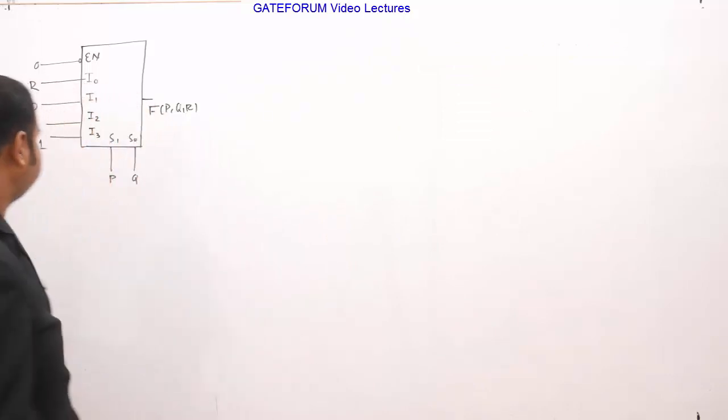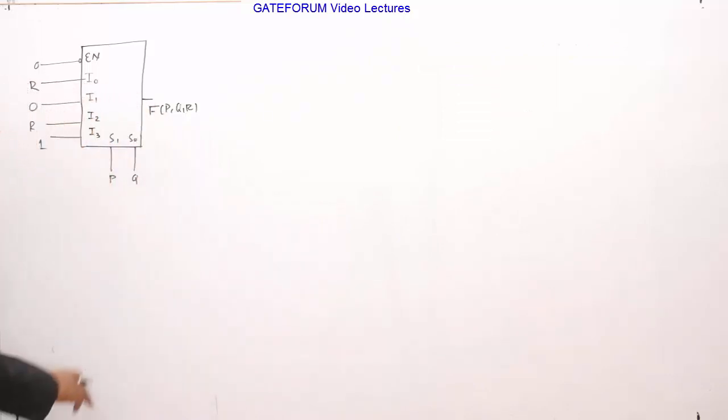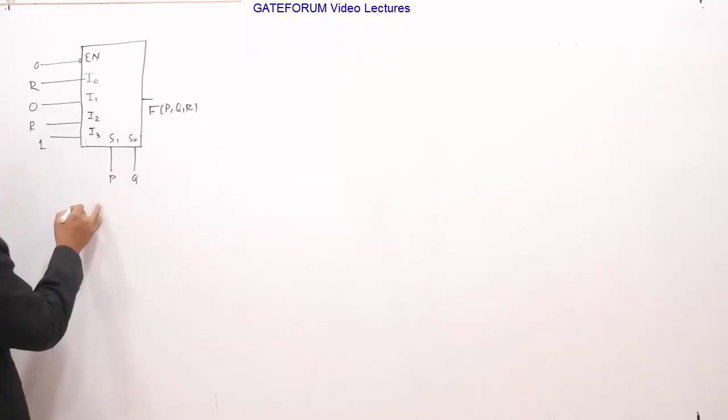So basically this is what the circuit is given and we need to find the expression of F in terms of PQR. You know very well for a multiplexer like this, this is a very usual model and an easy problem.